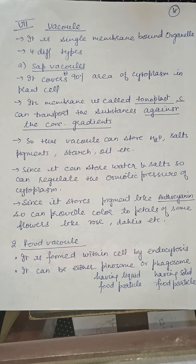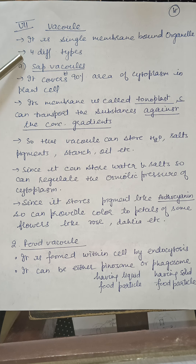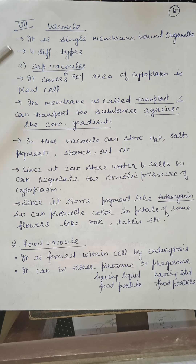Vacuoles are of different types: sap vacuole, food vacuole, contractile vacuole, and gas vacuole. It is a single membrane-bound organelle existing in these four different types.